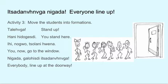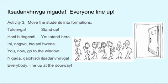Ijadananaga. Nigada — Everyone line up. Activity three: Move the students into formations in the classroom. Tell somebody Talehaga. Tell that person Hanihidogesti — You stand here. Tell another person, Ihihnogui. Dolaniiwena — You now, go to the window. Tell everybody in the class, Nigada. Galohisti. Ijadananaga — Line up at the doorway.